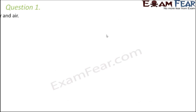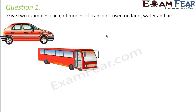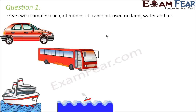Let us quickly look at some of the questions. Question number one: give two examples each of modes of transport used on land, water, and air. When you talk about transport on land, it could be anything like a car, bus, bicycle, bike, scooter — they are all means of transport on land.